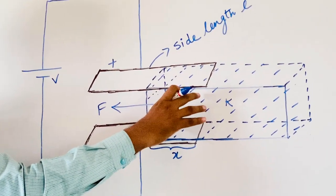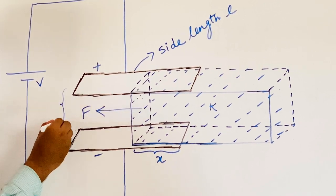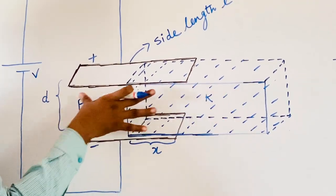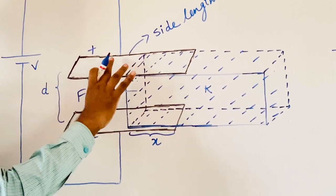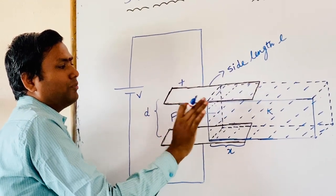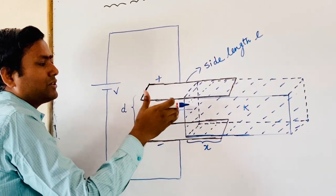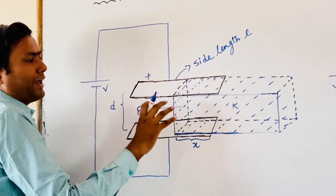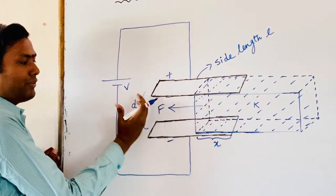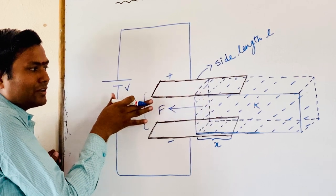Whenever this dielectric slab completely fits between the plates of the capacitor — suppose the distance between the plates of the capacitor is D — whenever this dielectric slab completely fits between the plates, at that time the resultant force on this dielectric slab will become zero. At that point there is no force. But due to the continuous action of this force, the dielectric slab has gained some velocity. This velocity makes the slab move further out of the plates. At that time, this force again acts in the rightward direction.